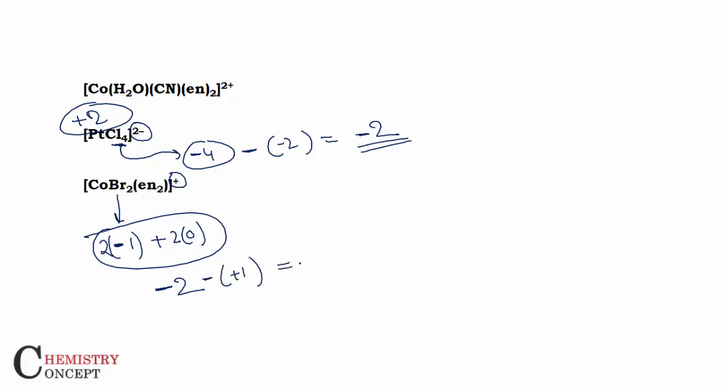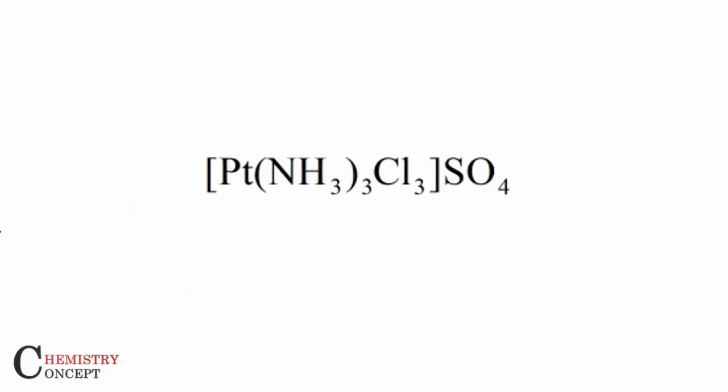The total charge comes to minus three, so the cobalt charge would be plus three. I hope that was clear. As a practice problem, find the oxidation state of platinum in the given compound and write your answer in the comments — I will tell you the right answer. Please don't forget to like, share, and subscribe to the channel. Thank you.